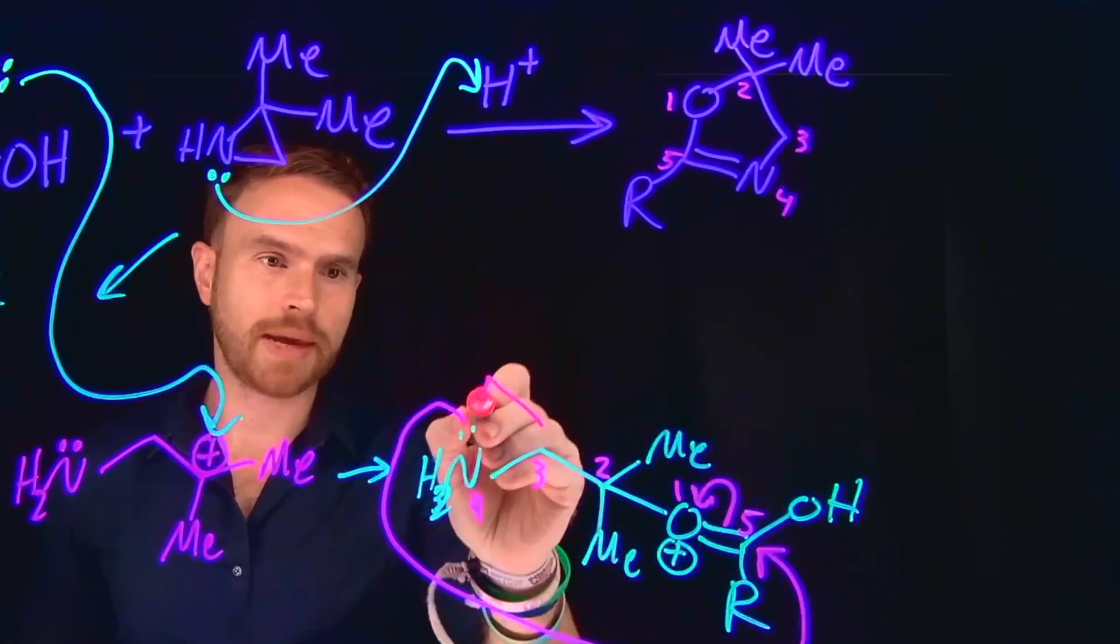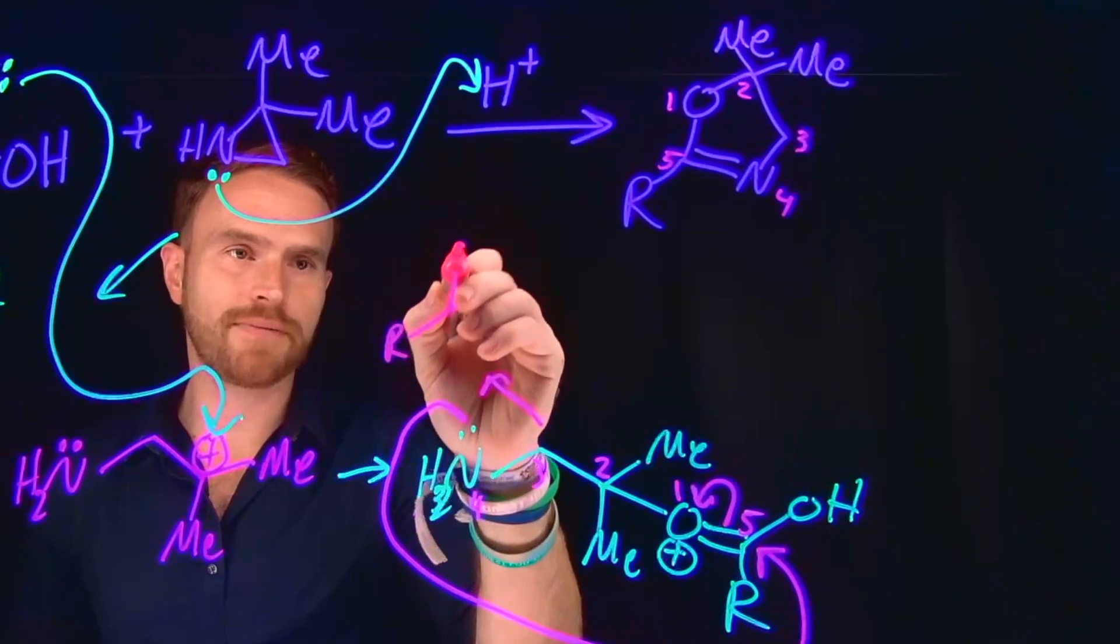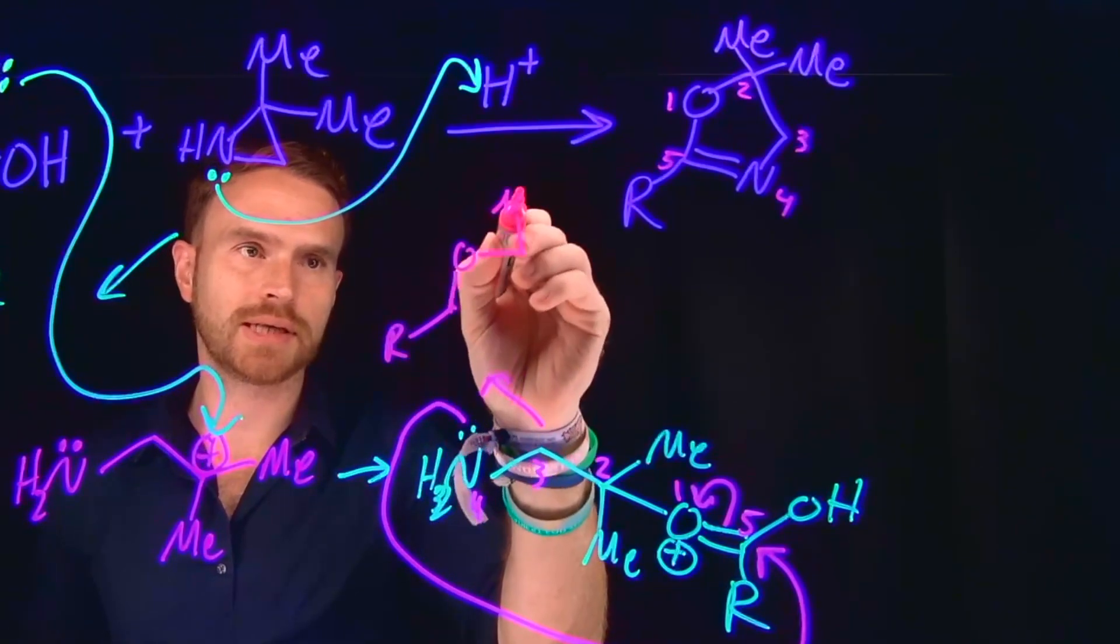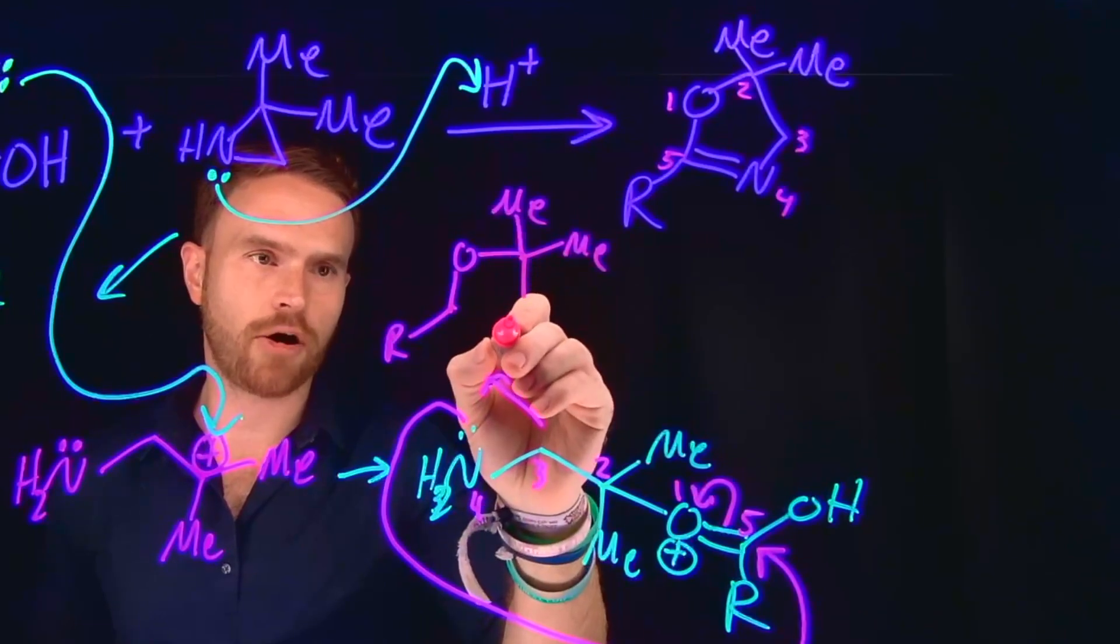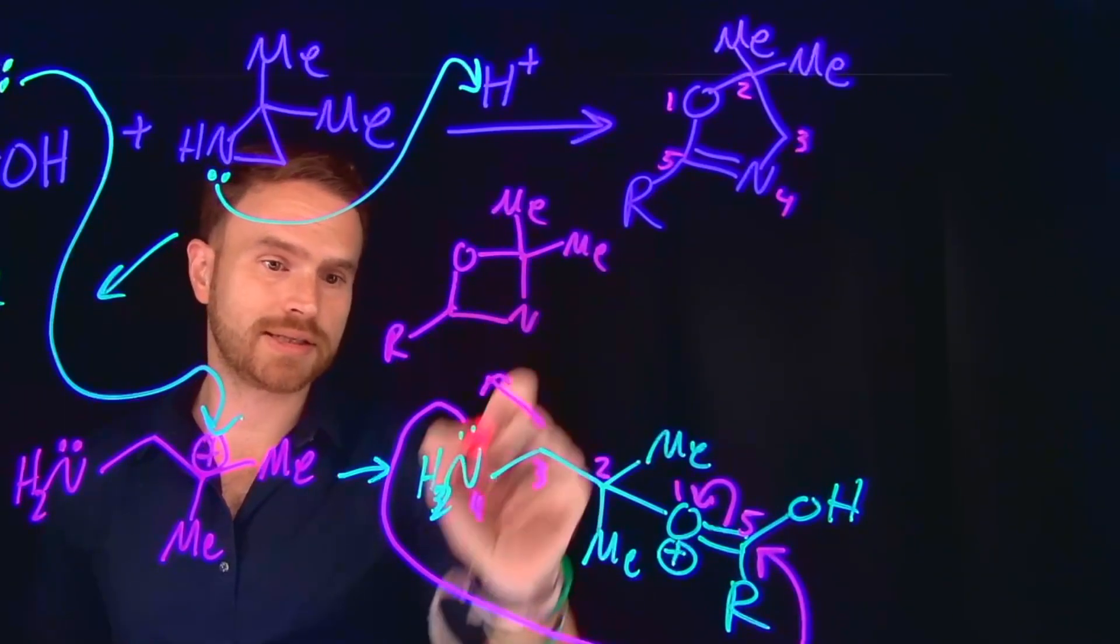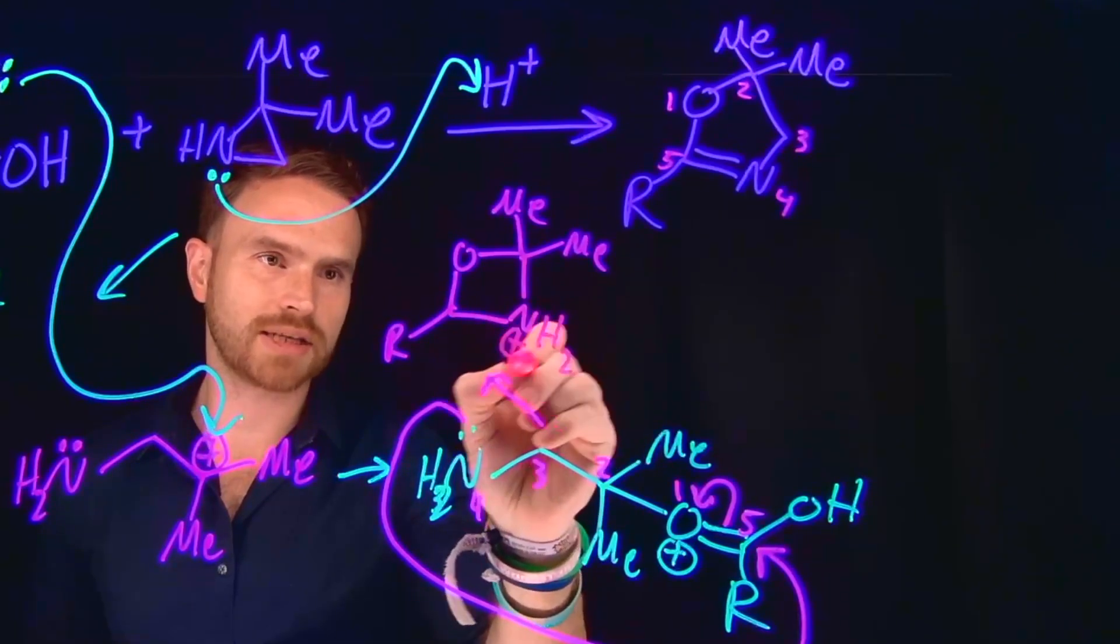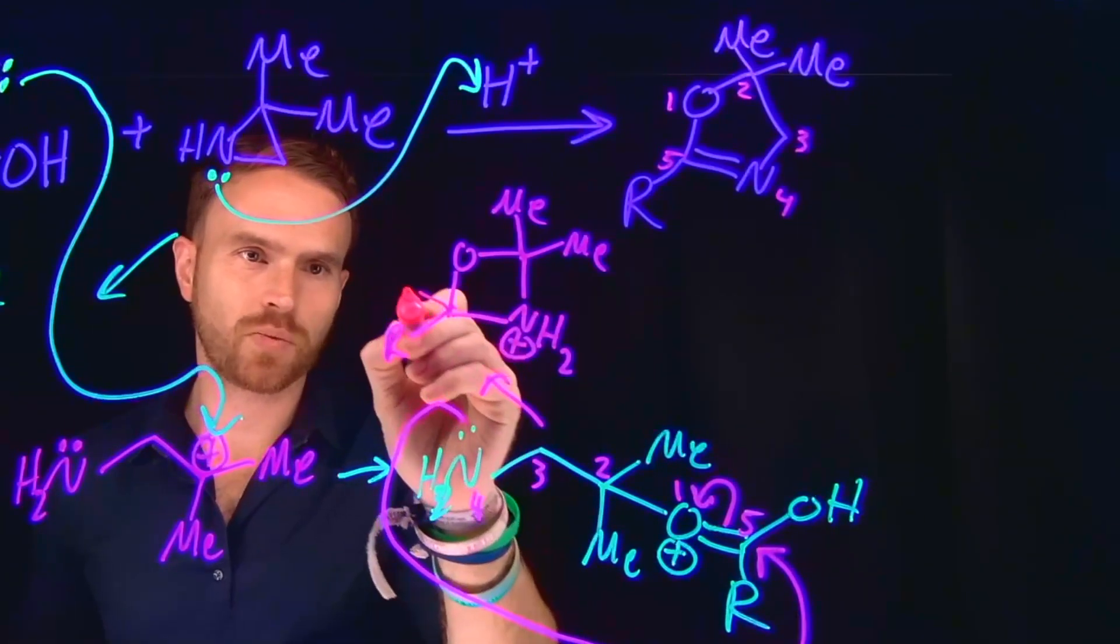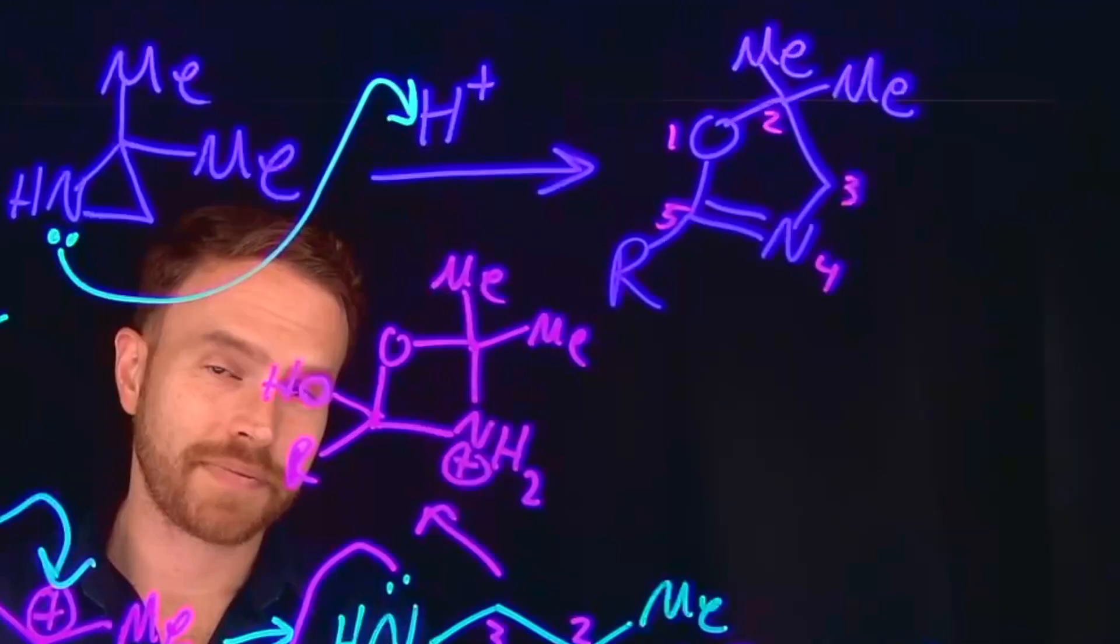So the product of this transformation is going to be that ring that we have now formed, except for a few remaining pieces that we need to go through to get to our final product. So we have our nitrogen bond here. And remember, it still has two hydrogens on it. So therefore, it's going to be positively charged. And then at this position, we have our OH group, which came as part of this carboxylic acid.